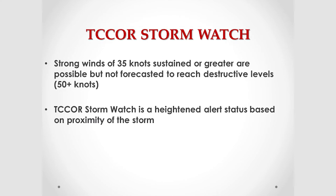T-Core Storm Watch is a heightened alert status based on the proximity of the storm. Sometimes a storm is passing by Sasebo but close enough that we're going to get some winds, and it still poses a danger and could shift its track, so we would order a T-Core Storm Watch in that event. You still have to be very vigilant about what's going on with the storm.